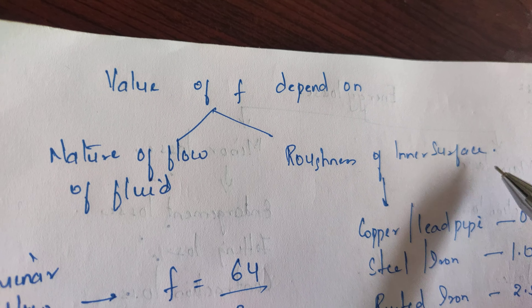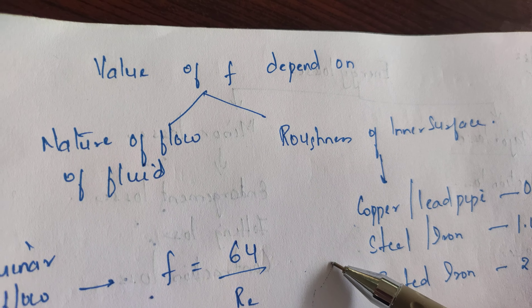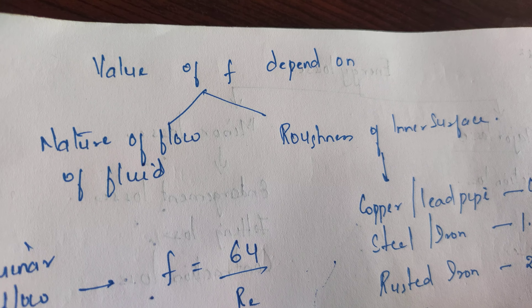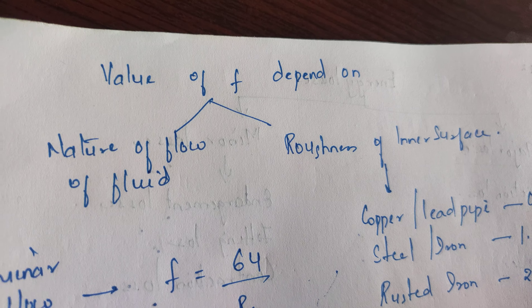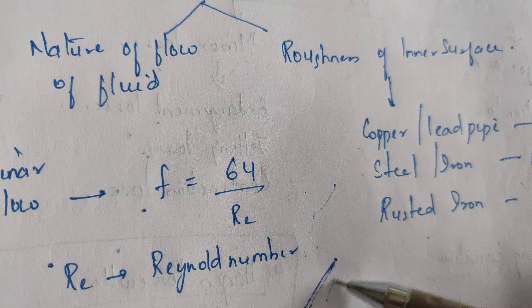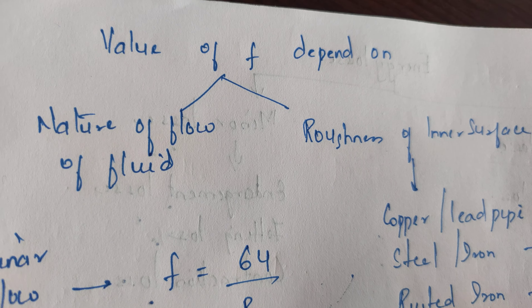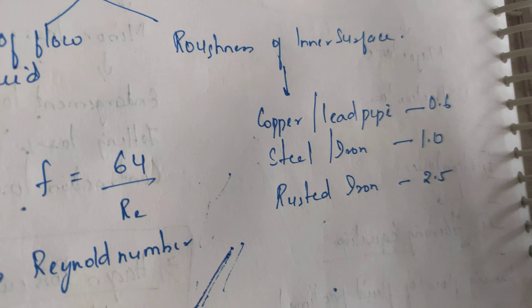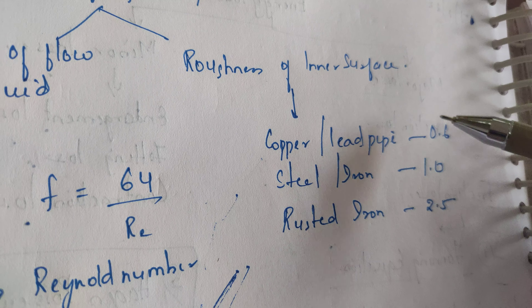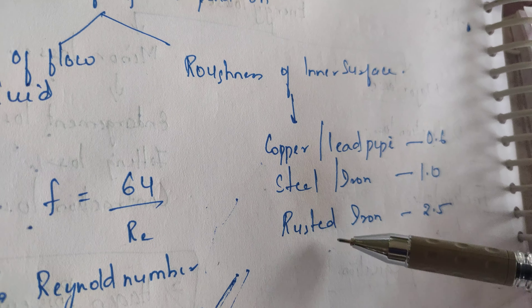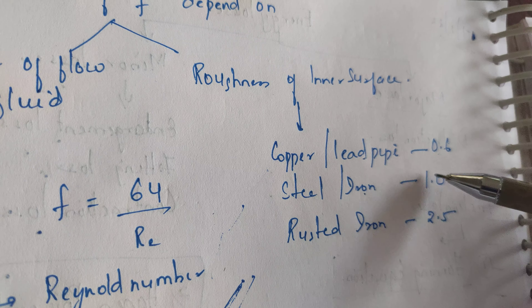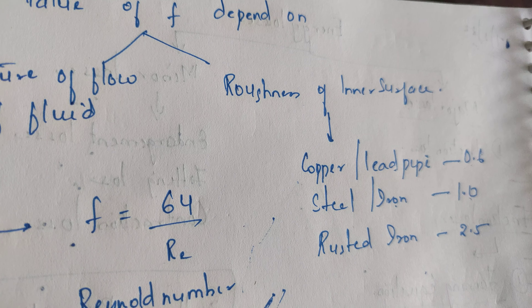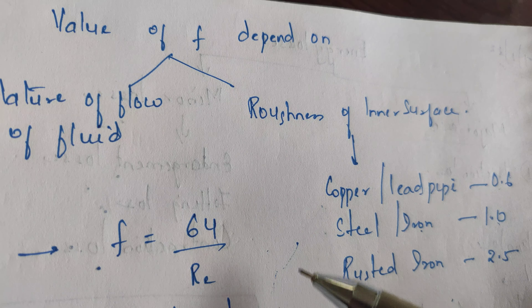For the roughness of the inner surface, the surface may be smooth or rough depending on the pipe material. The roughness values available are: for copper pipe or lead pipe the value is 0.6, for steel and iron the value is 1.0, and for rusted iron the value is 2.5.